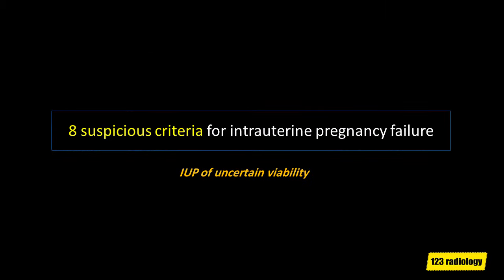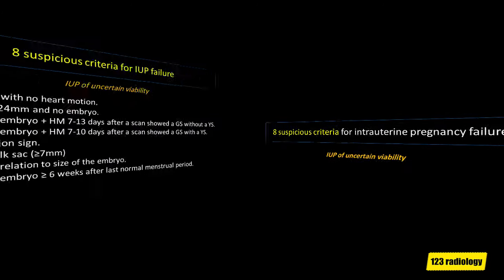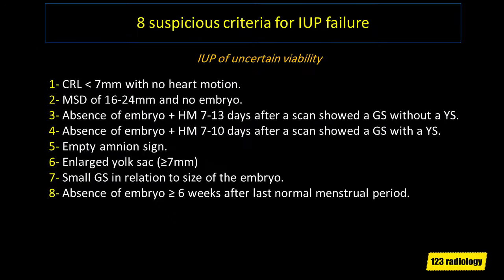Suspicious criteria for intrauterine pregnancy failure — also known as IUP of uncertain viability — include eight criteria, listed as follows.